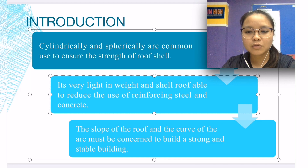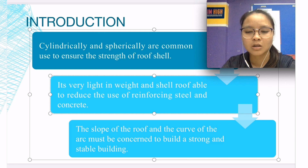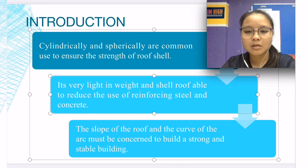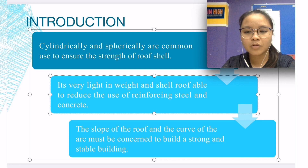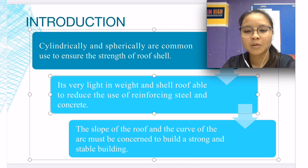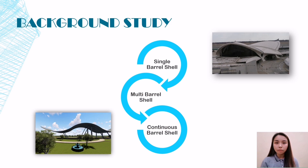Other places normally built with shell roofs because they are very light in weight, and shell roofs are able to reduce the use of reinforcing steel and concrete. Therefore, building shell roofs is able to save the cost of development because the structural efficiency requires less material compared to more traditional roofs. In-situ reinforced concrete is the common material to make shell roofs. However, timber and steel may be used for reinforced composite structures. The slope of the roof and the curve of the arch must be considered to build a strong and stable building.